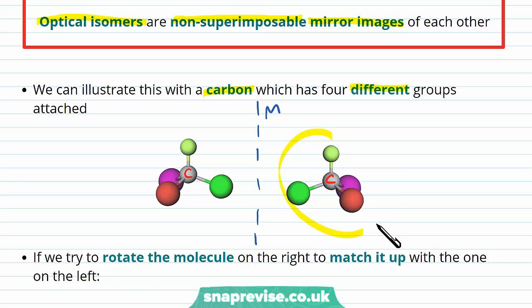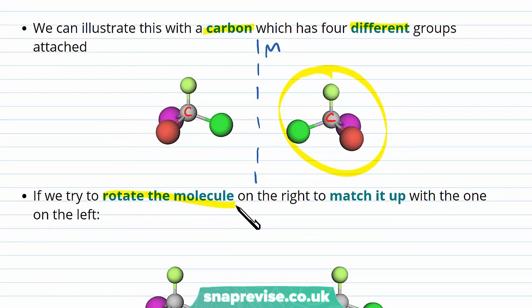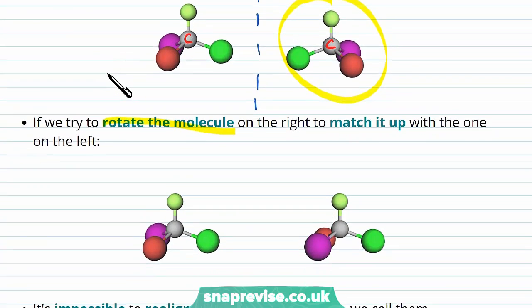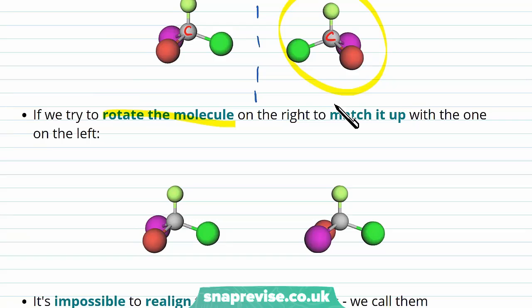Now we've created this molecule by reflecting the other one, let's rotate it to try and match it up with the original molecule. So what we've done here is rotated this carbon to try and line it up with the other one.